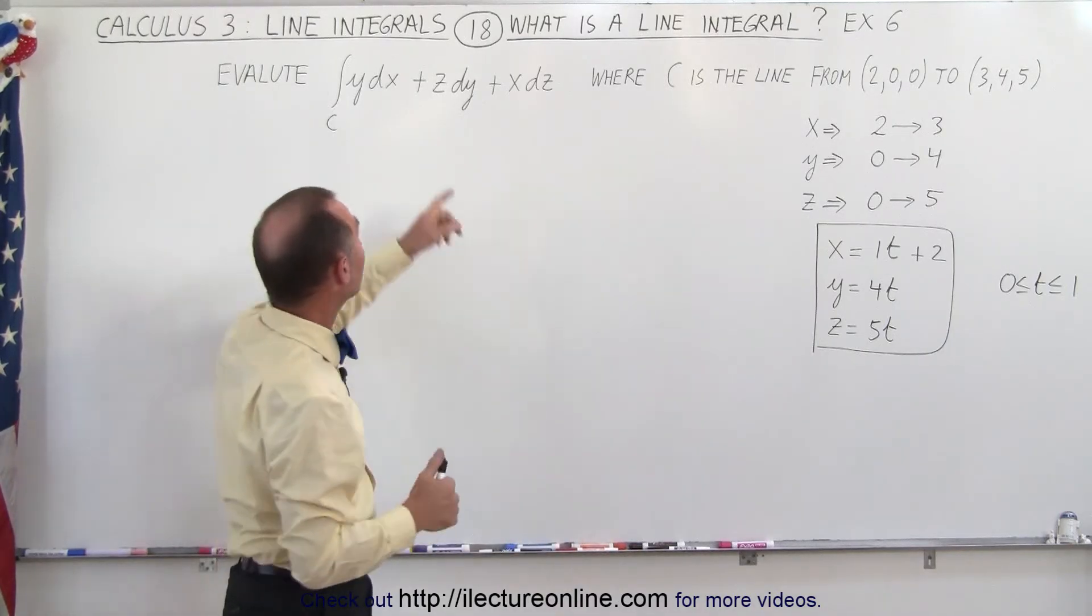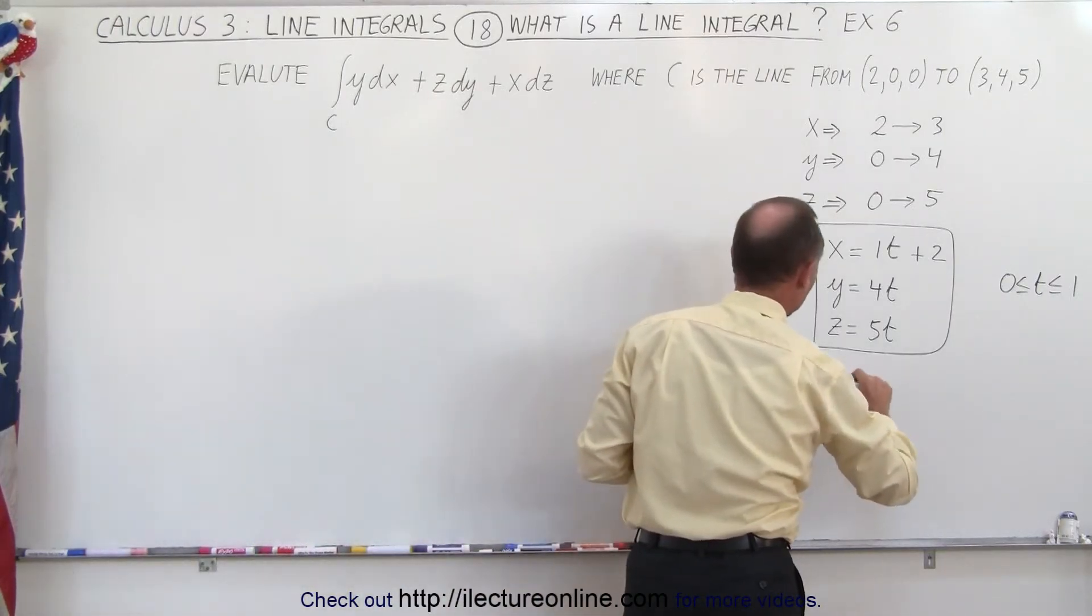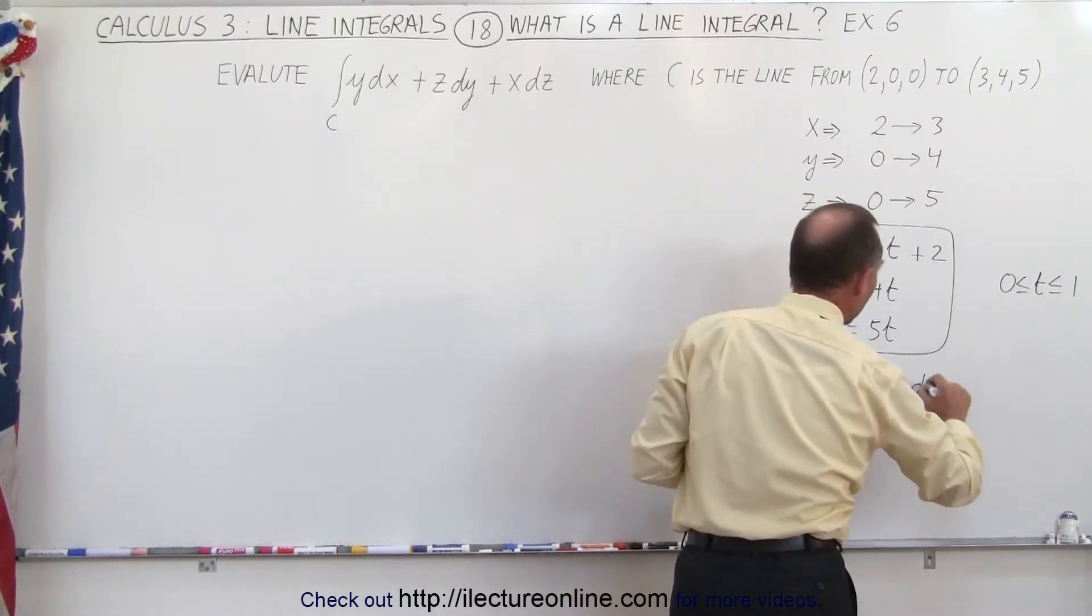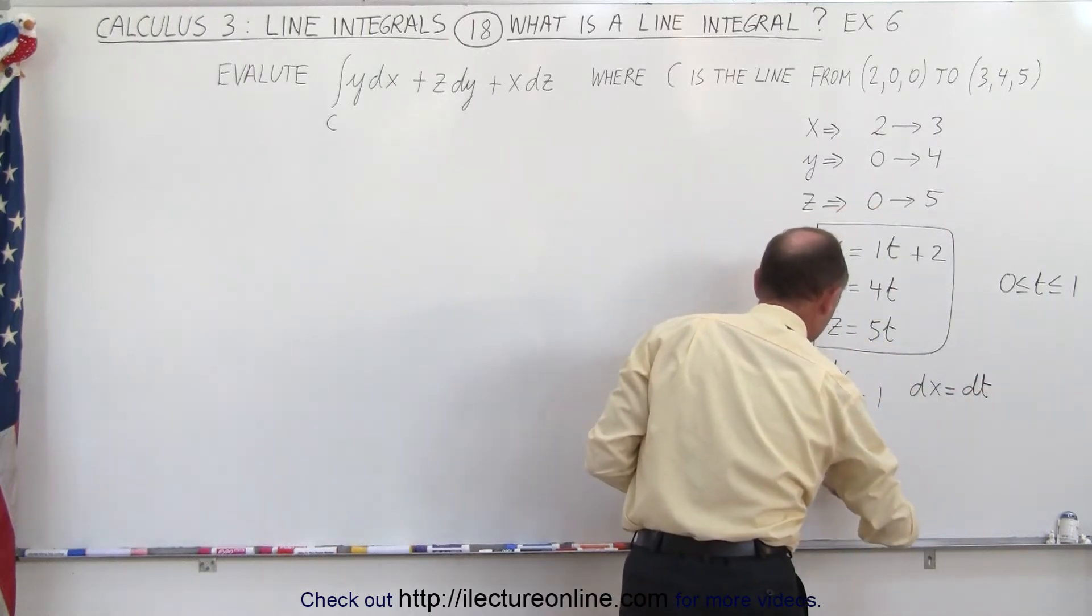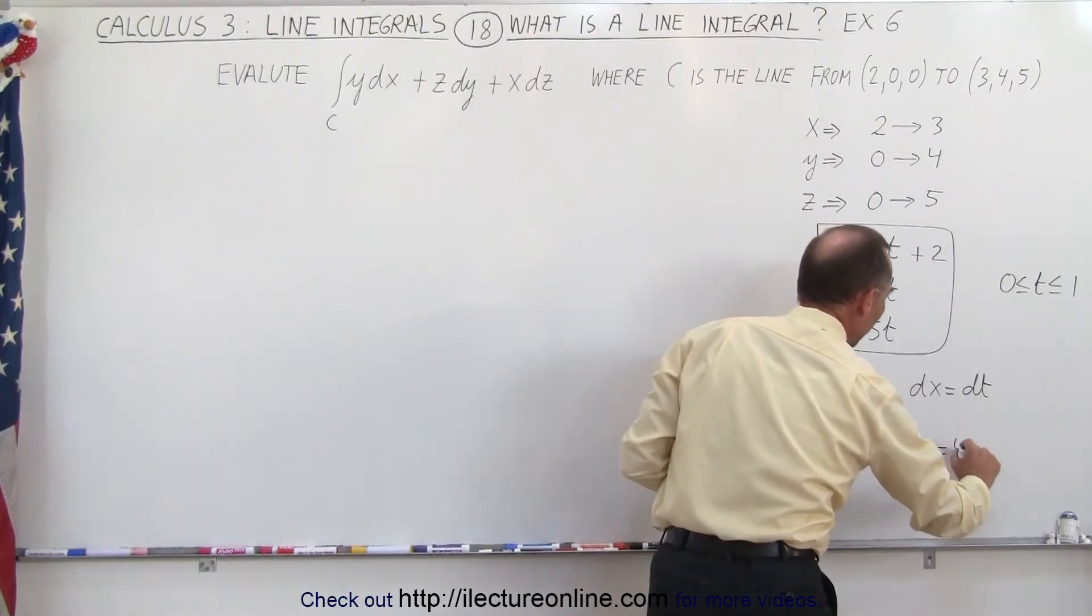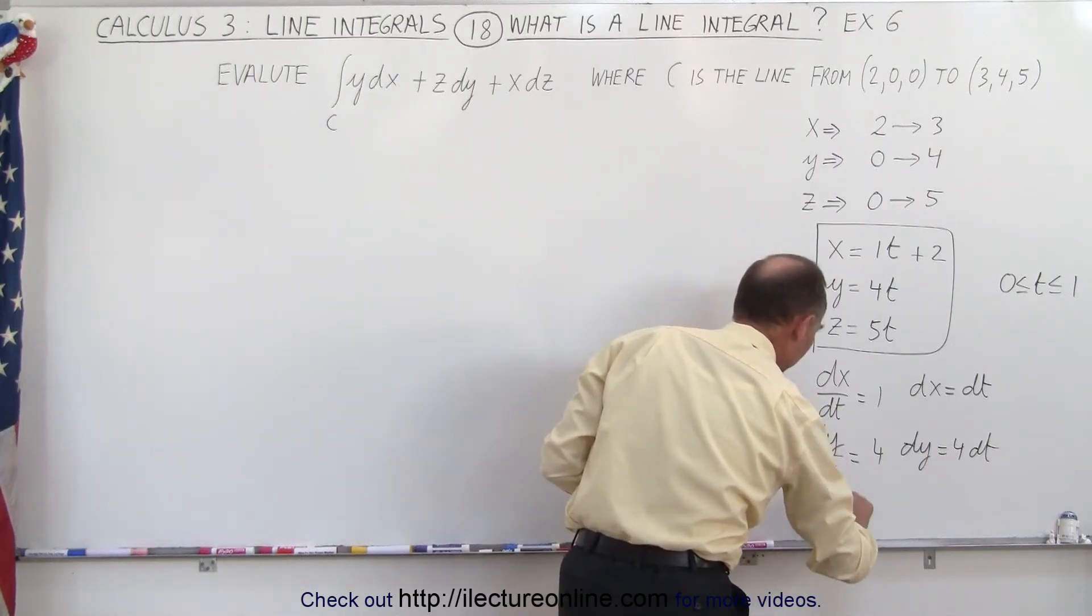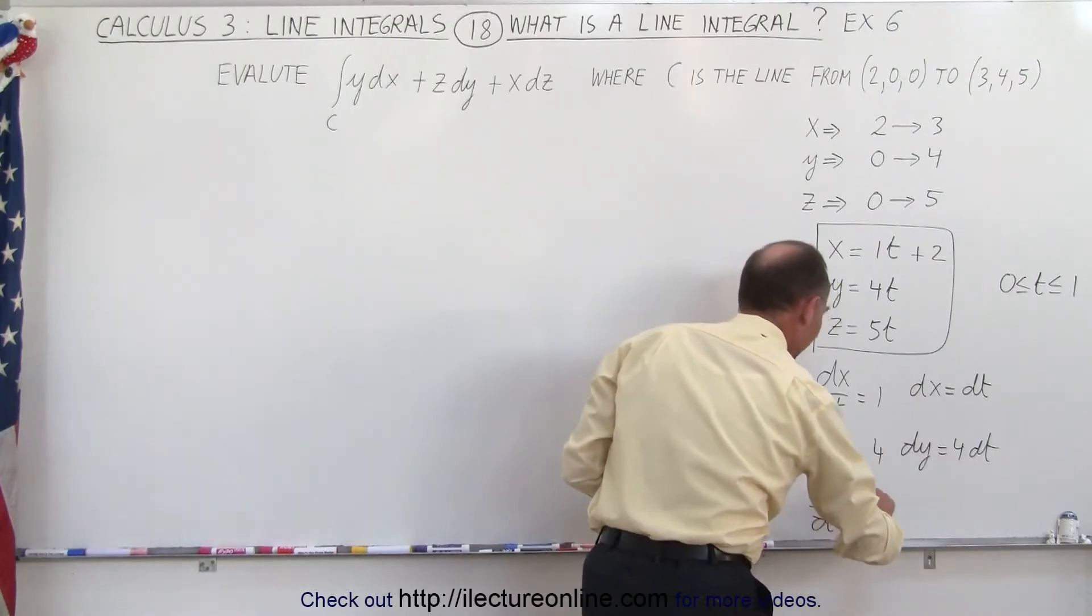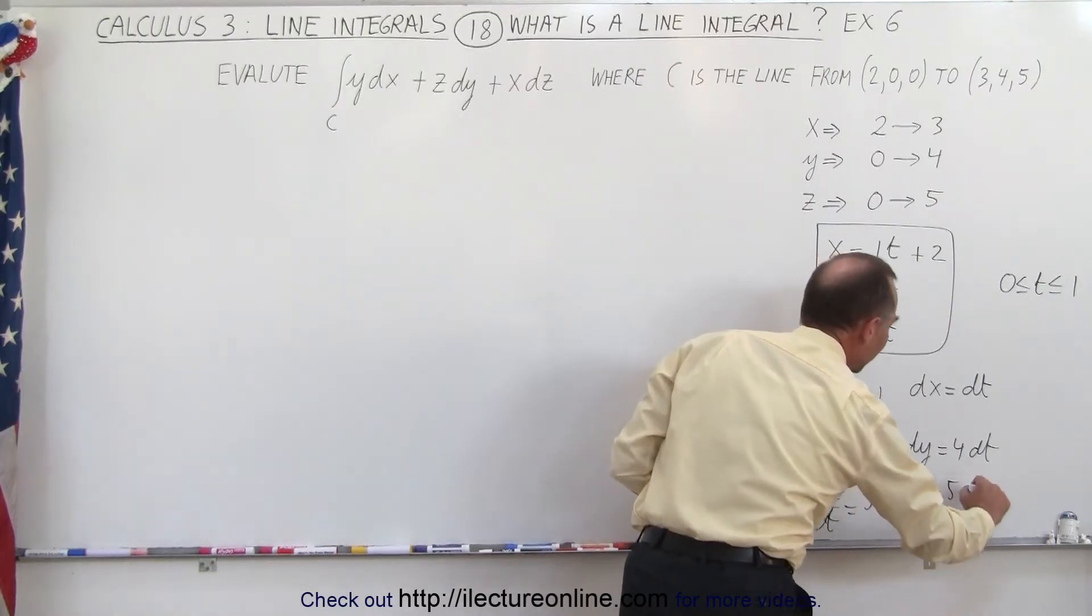Then, of course, we still need to find dx, dy, and dz. So in this case, dx/dt is going to be equal to 1, and that means that dx is equal to dt. dy/dt is going to be equal to 4, which means that dy is equal to 4 dt. And likewise, we can see that dz/dt is going to be equal to 5, which means that dz can be written as 5 dt.